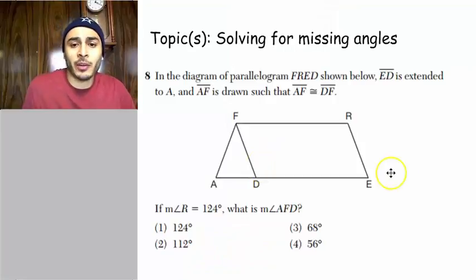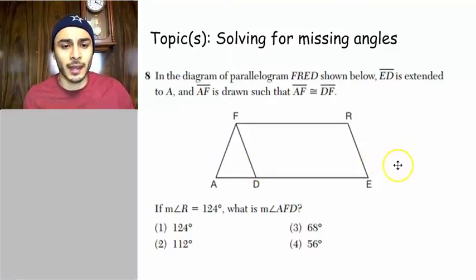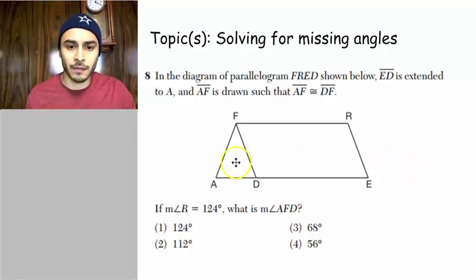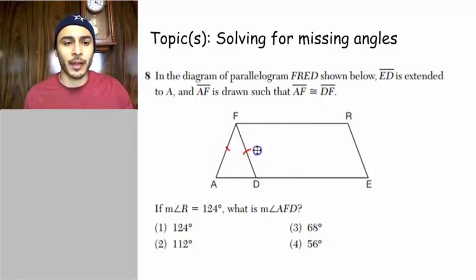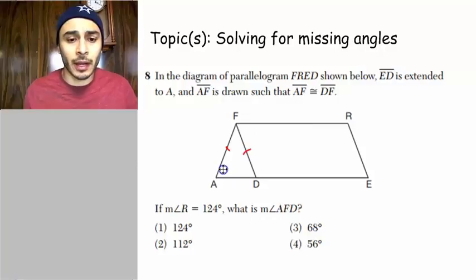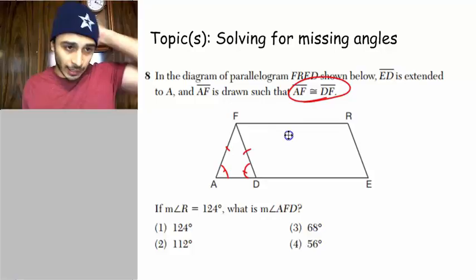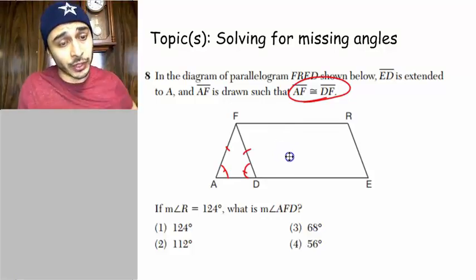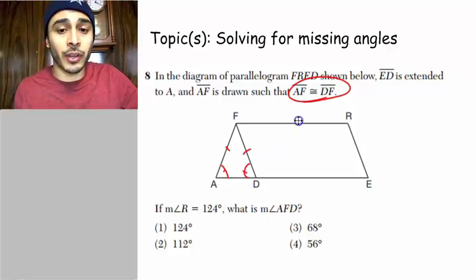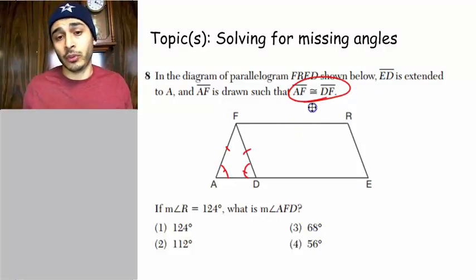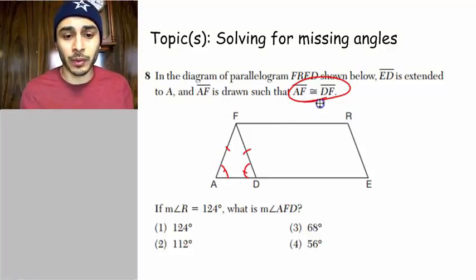Number 8. In the diagram of parallelogram FRED, shown below, ED is extended to A and AF is drawn such that AF is congruent to DF. Label that in your diagram. That's important. So we got ourselves a nice isosceles triangle here. And I know that because it's a triangle with two congruent sides. They told me so. They'll never say it's isosceles. Rarely they'll say that. You're supposed to know that if you're given two congruent sides for the triangle, then it must be isosceles. And then therefore we'll conclude that the base angles are also congruent.